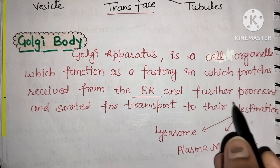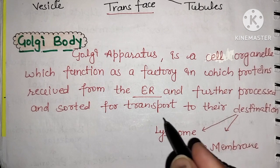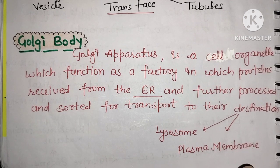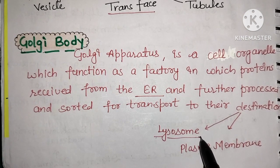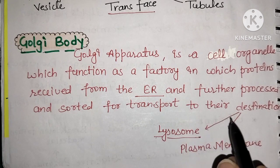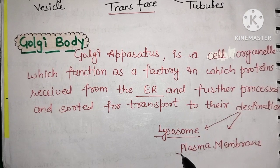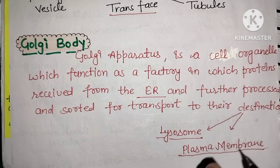Proteins are received at the cis face from the endoplasmic reticulum and further processed. For example, if there is a hydrolytic enzyme protein, it is synthesized in the endoplasmic reticulum, modified there, and then further modified in the Golgi apparatus. If a protein is destined for the plasma membrane, it will be appropriately modified and sent to the plasma membrane.